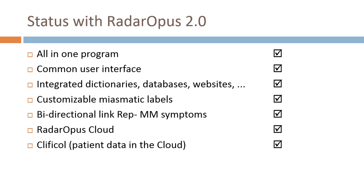The labeling project has started, first with miasmatic labels, where people can customize and add their own miasmatic labels within the framework set by teachers. In RADAR and Encyclopedia Homeopathica, there was a link so people in the Repertory could see the original source text of Materia Medica. Now the link has become bidirectional — I can go from the Repertory to my original Materia Medica symptom, and from that symptom I can see to which Repertory symptoms that text has been linked. The RADAR OPUS cloud is released with version 2, mostly to offer Clifico — patient data online in the cloud — allowing people to collaborate in research or practices in different places.